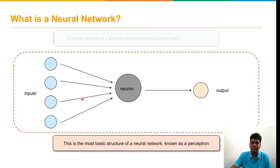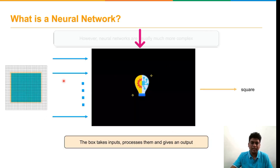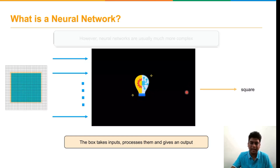The basic structure of a neural network is called a perceptron. The various types of perceptron are single-layer perceptron and multi-layer perceptron. This box takes input data, processes it, and gives the output — for example, a square is given as input and the output is predicted as square.